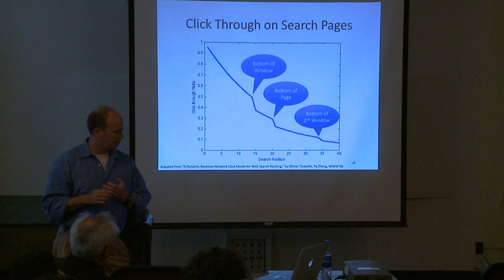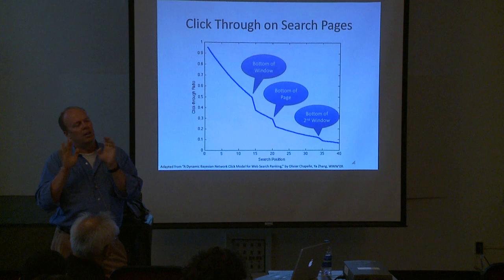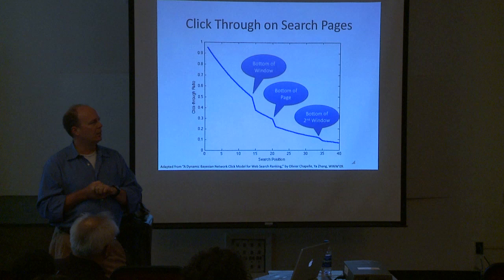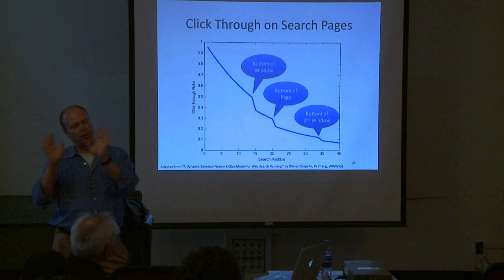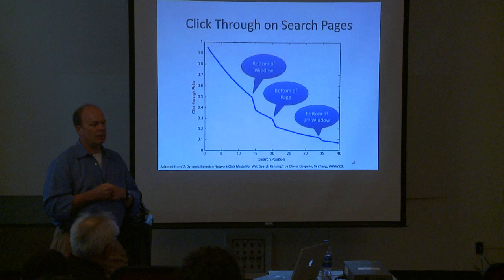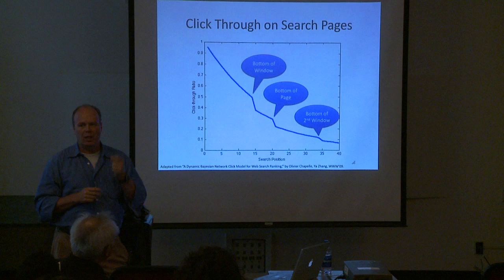Before I start, I want to talk about how search works and what happens in search, because it was new to me and it's very different from what I expected, especially for multimedia. This is a very typical graph - it's gospel in the search field. It shows how often you clicked on a web page as a function of position. The probability of clicking on a page drops dramatically at the bottom of the window, then continues, and drops again when you have to go to the next page.